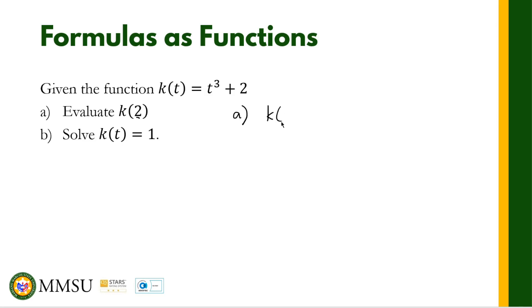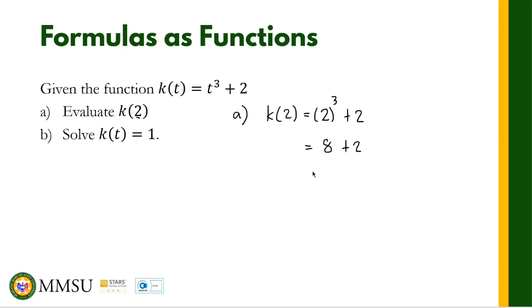k of 2 is equal to 2 raised to the 3rd power plus 2. We simply substitute the input value into our variable. This gives us 8 plus 2, which is equal to 10.